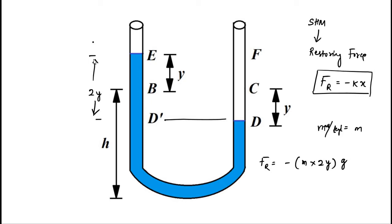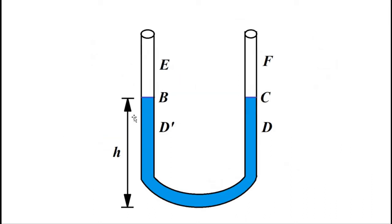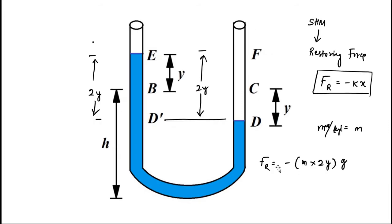The liquid is pushed down to point D, so the extra level in the left limb from the reference position is 2y. This extra portion of liquid in the left limb exerts the restoring force, which tries to bring the levels in both limbs back to the initial equilibrium position. That restoring force is given by −m·2y·g, where m·2y is the total mass of the liquid in the extra portion, since m is mass per unit length.